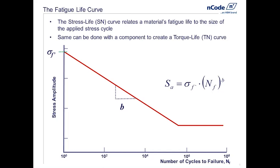The SN curve can be determined from material testing, or it can be done on components — say, a whole axle as built with heat treatments, stress concentrations, assembly pre-stress, and so on. On a component level, sometimes these are called TN curves or torque life curves. We'll look at how we use both the stress life curve and the torque life curve today.